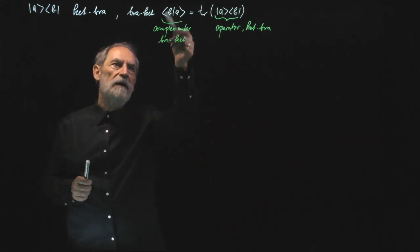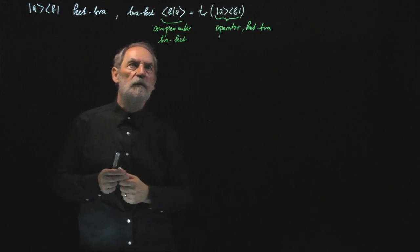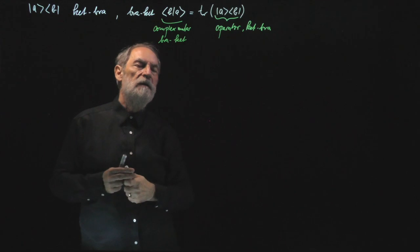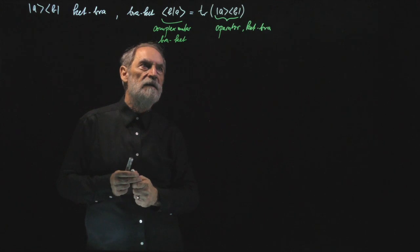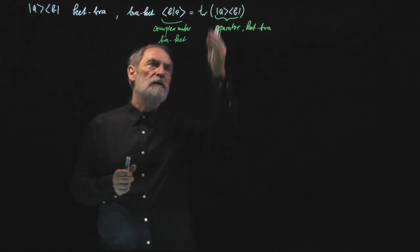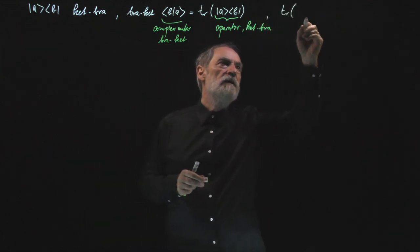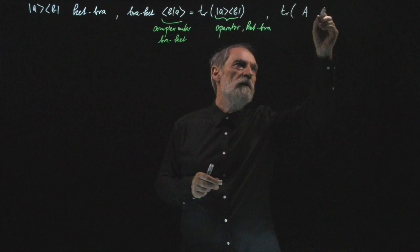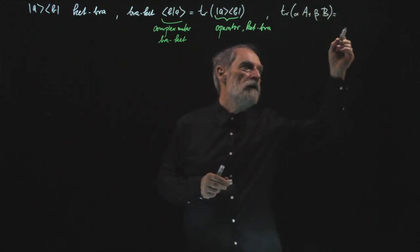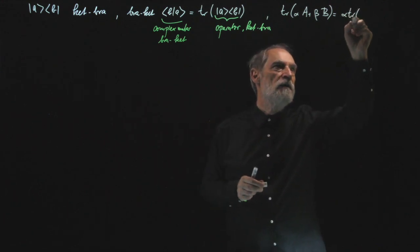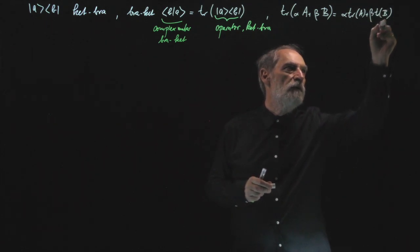Since these brackets are linear in both the ket and the bra, I can write the ket as a sum of other kets and the bra as a sum of other bras. There is a corresponding linear structure for the trace. So if I have the trace of alpha times operator A plus beta times operator B, that is just equal to alpha times the trace of A plus beta times the trace of B.